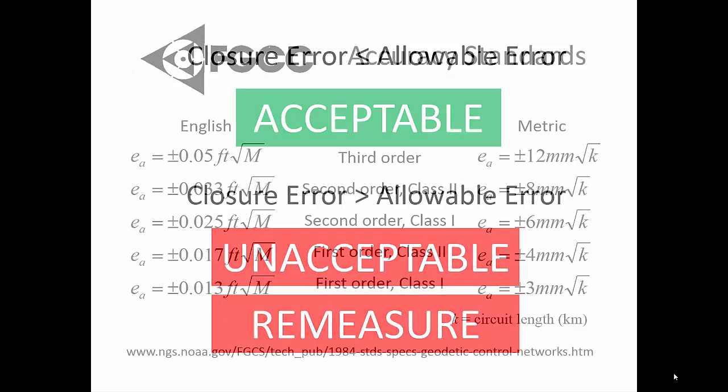This allowable error standard is one of the lower quality standards established by the FGCC or Federal Geodetic Control Committee. Third order leveling closure, as we have seen here, is adequate for all agricultural and most construction and engineering applications.